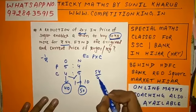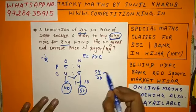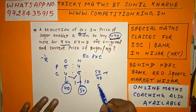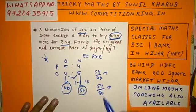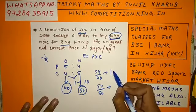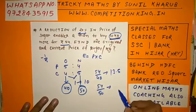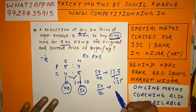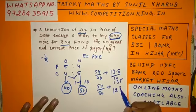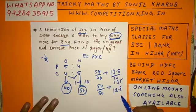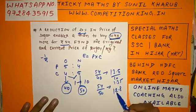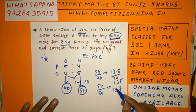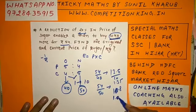Now 1 kg price originally: Rs. 54 / 40 = Rs. 1.35 per kg. This is the original price. Now 1 kg new price: Rs. 54 / 50 = Rs. 1.08 per kg. Hope it is clear.